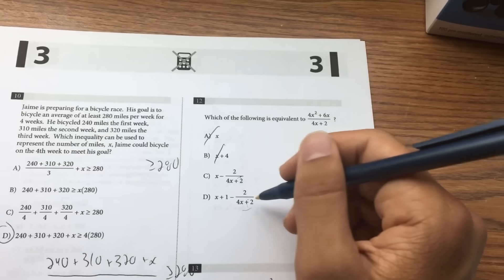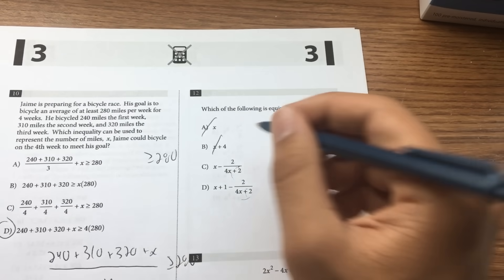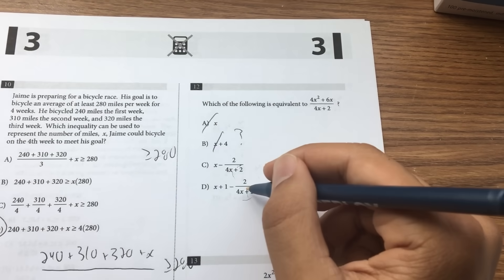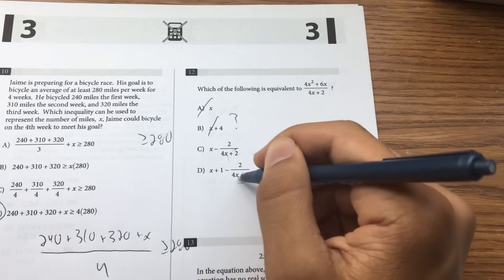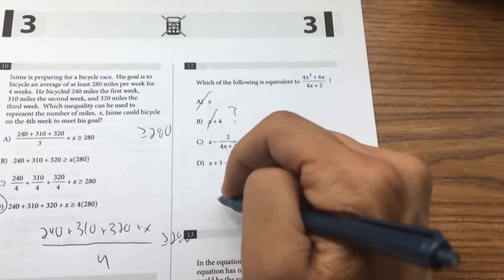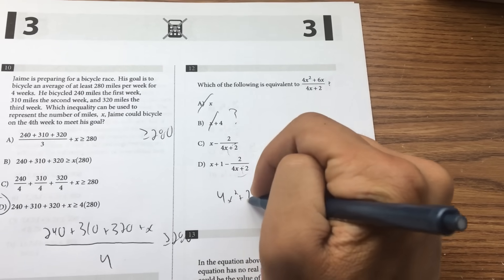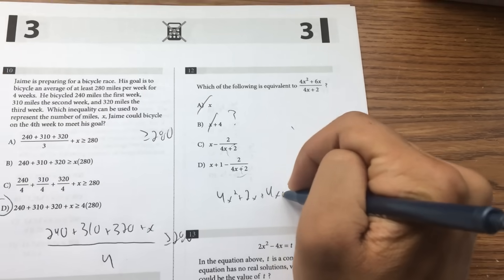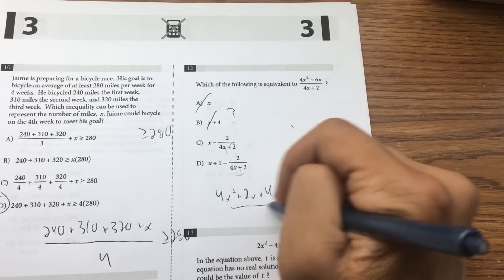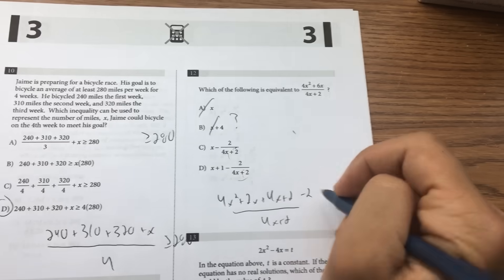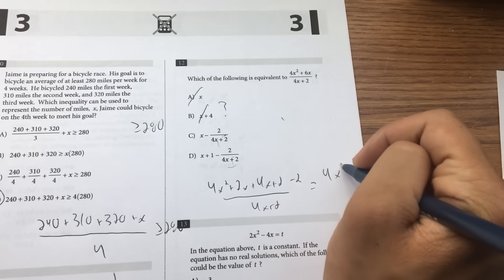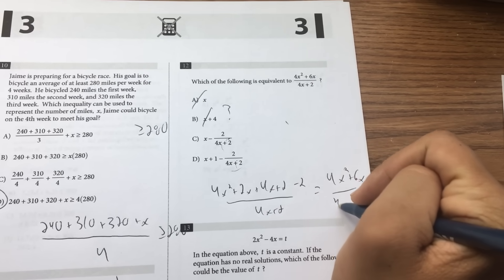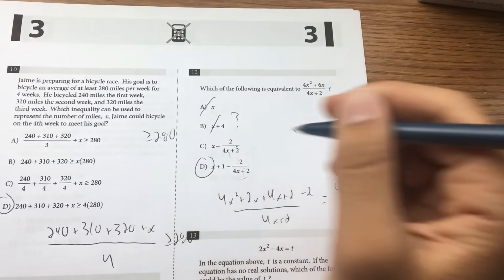Multiply by 4x plus 2, both all sides, all the terms. That's 4x squared plus 2x plus 4x plus 2 minus 2, all over 4x plus 2, which is equal to 4x squared plus 6x over 4x plus 2. So it's D.